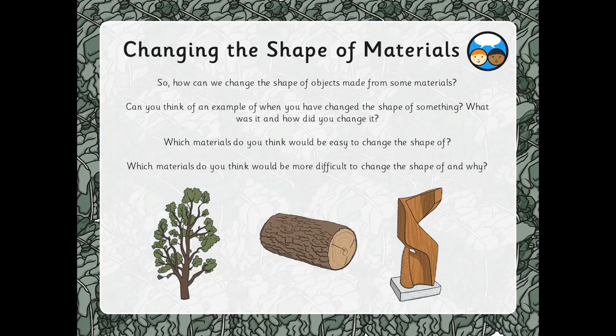Which materials do you think would be more difficult to change the shape of? For example, metal. Would it be hard to change the shape of a metal object? Or an object made out of rock? And if so, why?